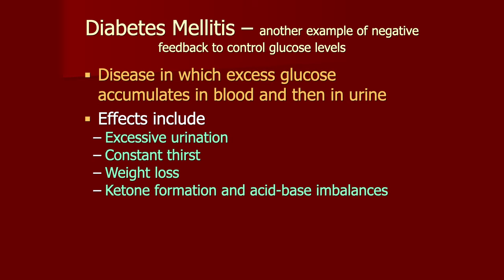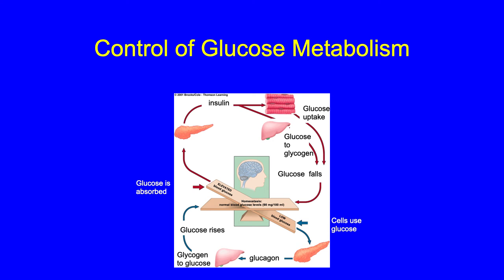Diabetes is an example of a negative feedback mechanism — a disease in which excess glucose accumulates in the blood and urine, causing excess urination, constant thirst, weight loss, ketone formation, and acid-base imbalances. The pancreas, another endocrine gland, produces insulin, which converts glucose to glycogen, causing glucose levels to fall. If blood glucose is low, the pancreas releases glucagon, which converts glycogen back to glucose, and glucose levels rise.